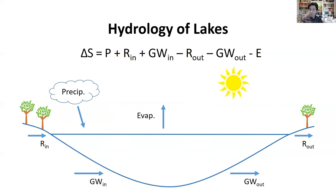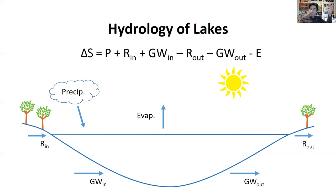There are three primary inputs to most lakes. In the water budget equation, delta-S (change in storage) equals P — precipitation directly falling on the lake — plus R-sub-n, surface runoff into the lake via a stream, river, or hillslope runoff, plus GW-in, groundwater flowing into the lake. Then we subtract the losses: R-sub-out (surface runoff out via an outlet stream or river), GW-out (groundwater throughflow), and E (evaporation), where water is lost from the lake directly up into the atmosphere.